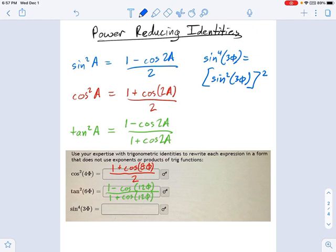And according to this formula, that's going to be equal to 1 minus cosine of 2 times the angle, which is going to be 6 phi, all divided by 2. And it's that thing squared.